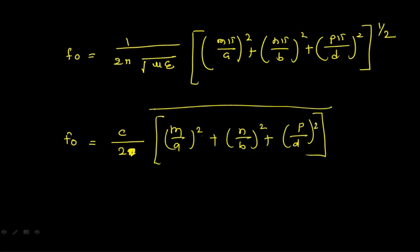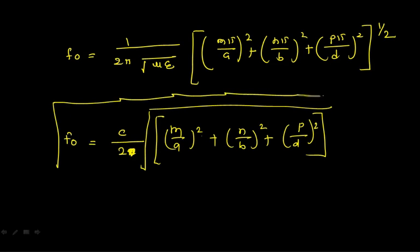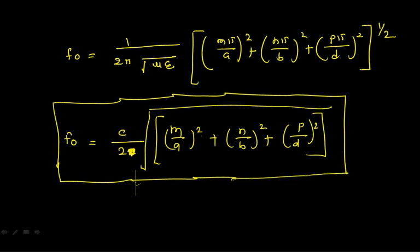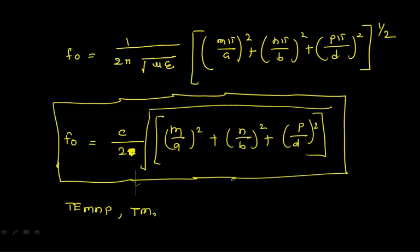This formula gives the resonant frequency for the rectangular cavity resonator: f₀ = (c/2)·√[(m/a)² + (n/b)² + (p/d)²]. The general modes of propagation in the cavity resonator are TE_mnp or TM_mnp. For both TE and TM, the resonant frequency expression is the same in the rectangular cavity resonator.